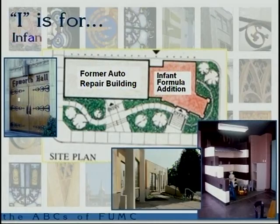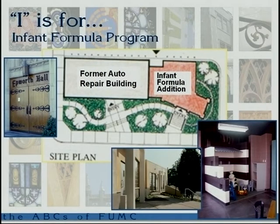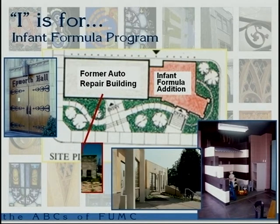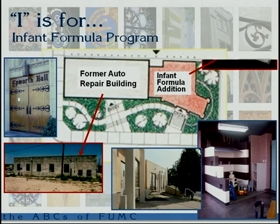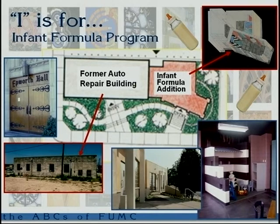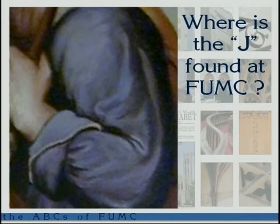I is for the Infant Formula Program, one of the first outreach missions of the church besides the clothing bank and the food bank. The Infant Formula Program was housed in a former garage over on First Street that was remodeled, with the infant formula wing added. There have been two additional expansions of the missions over the years.